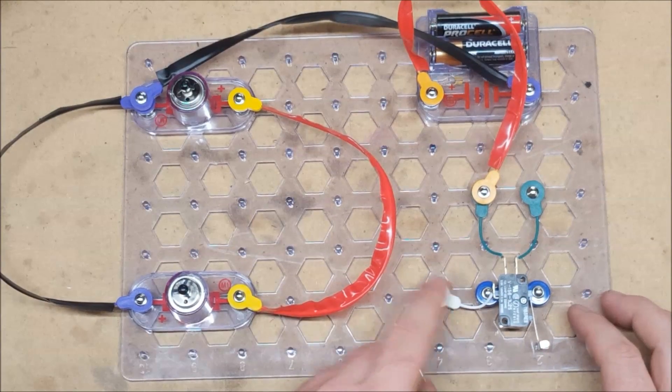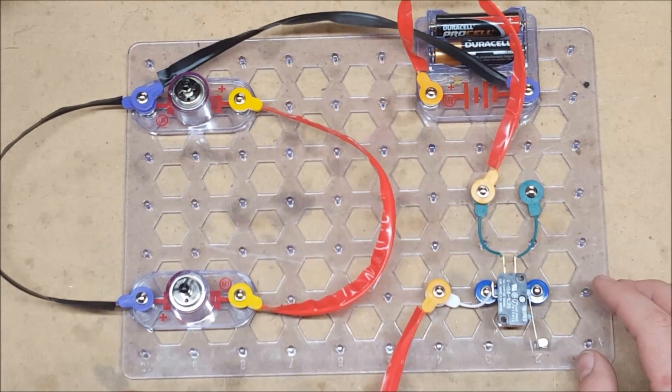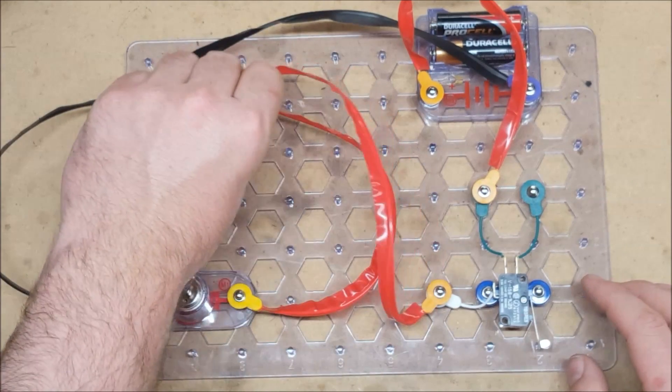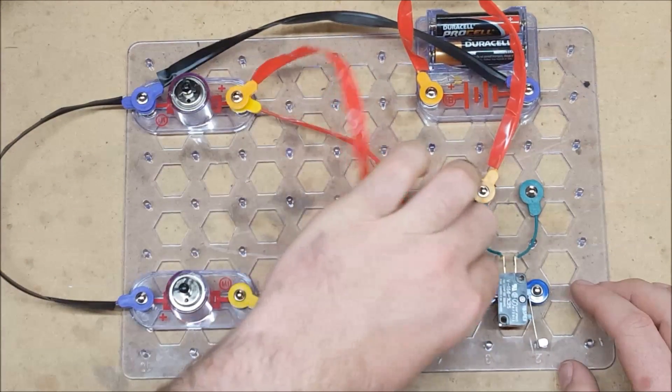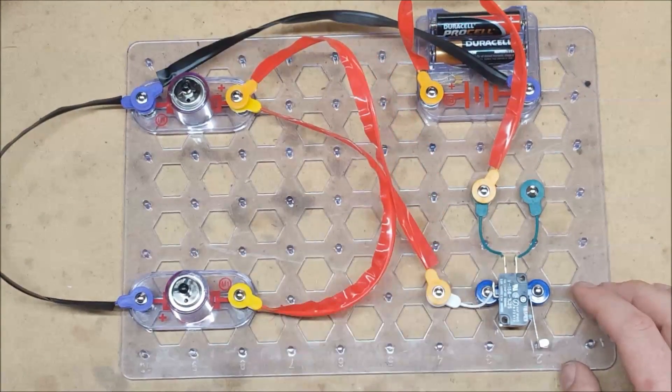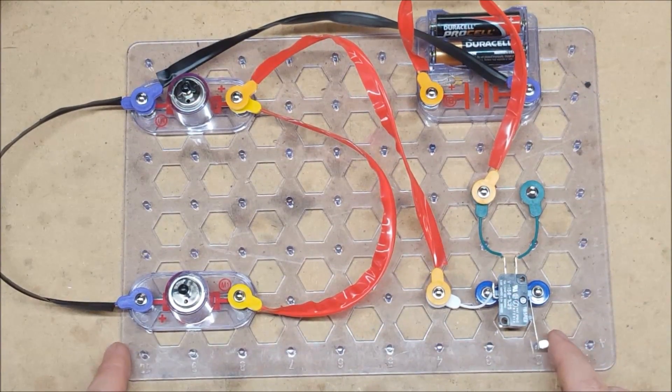We then connect the COM, which will also be labeled COM, to the positive on our motors. And this is all you need for a simple strife.